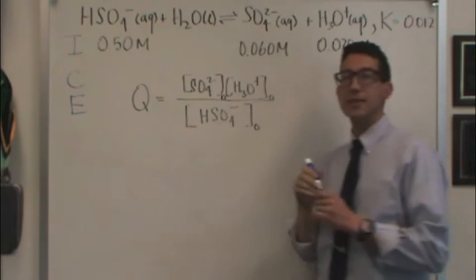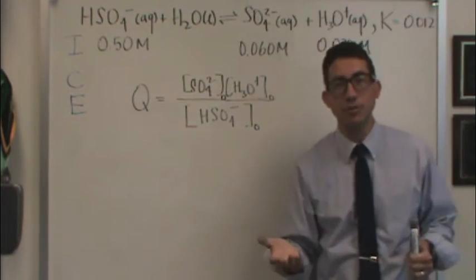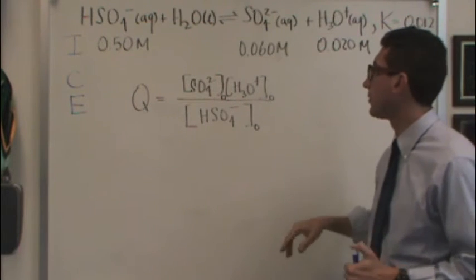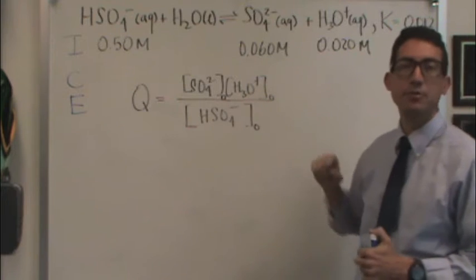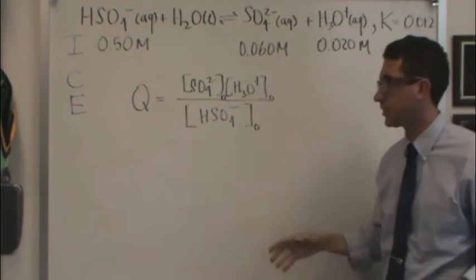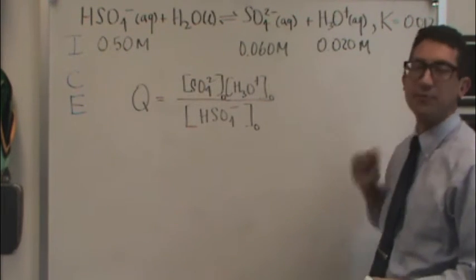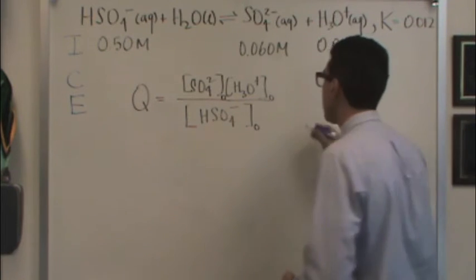To find the C line, we need Q, and so that's why I wrote Q on the board. Q is remember products over the reactants and these little zeros represent the starting conditions. Or Q is calculated from the I line. So let's do that with what we got.